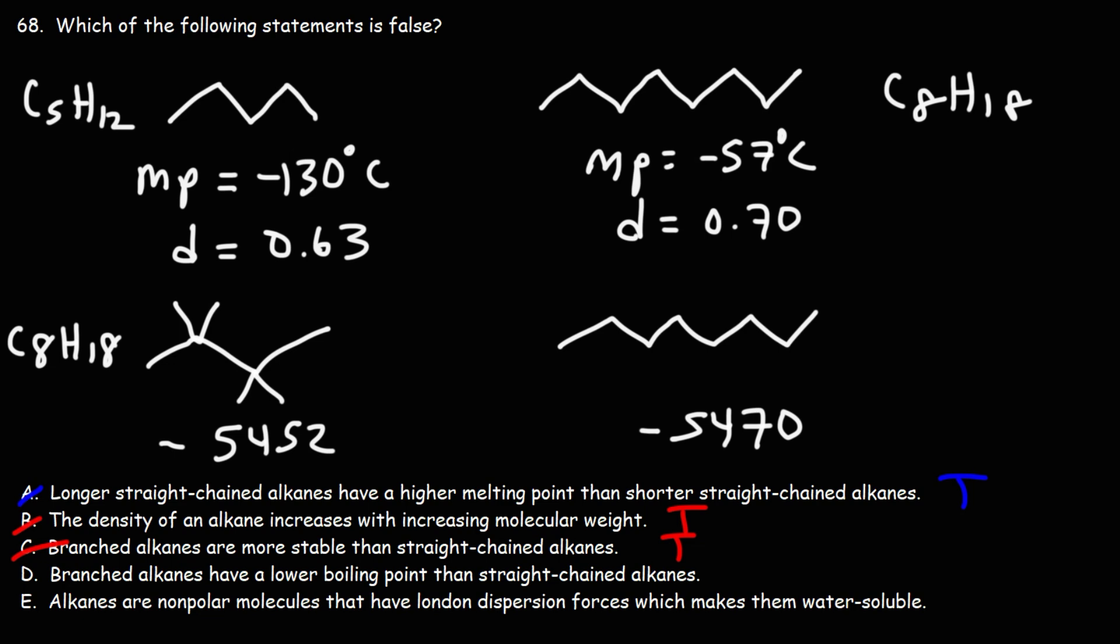Now, looking at answer choice D: branched alkanes have a lower boiling point than straight-chain alkanes. True or false? This is a true statement.